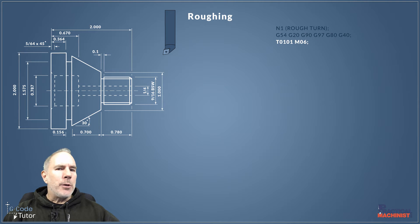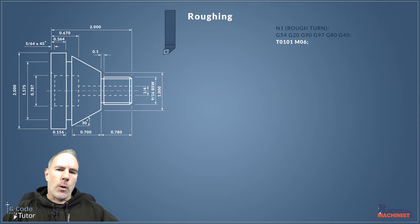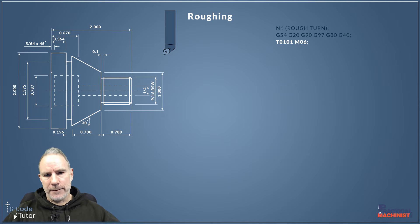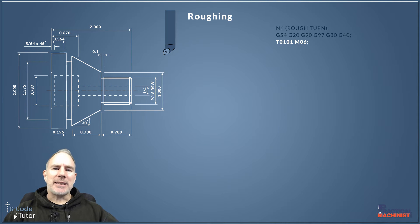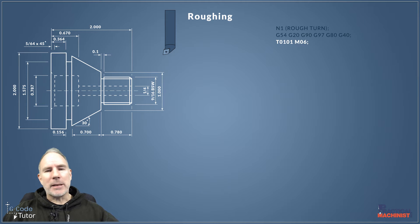After the safety line we move on to our tool call. T01 is the tool we're using, and the second number is the datum table position where we find the tooling information. So T0101 M06 means we're using tool one, with tool data from position one, and M06 is our tool change that brings the carousel or tool turret into the centerline with the tool active. I always keep my N numbers the same as my tool numbers so I can quickly search to the right sequence.